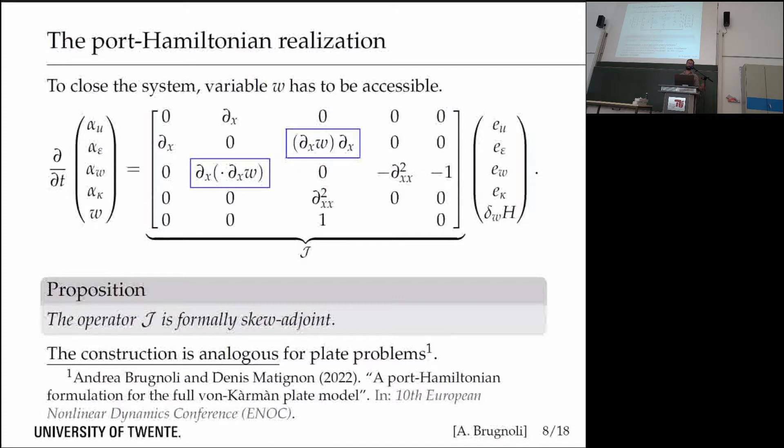This interconnection makes the vertical deflection appear, so you need to be able to access this variable as well. To close the system, I add this variable together with the classical energy variables. To have final skew symmetry of the interconnection operator, I need to consider the variational derivative of the Hamiltonian with respect to vertical displacement, which will be non-zero if we have a gravity potential.